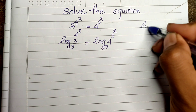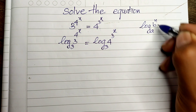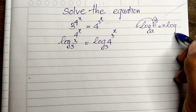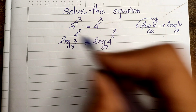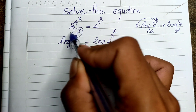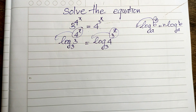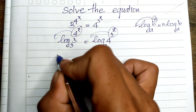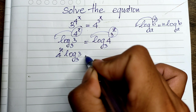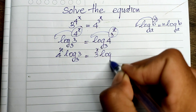Now we use the log rule: log base a of b to the power n equals n times log base a of b. So we can bring the exponent in front of the log. We take 4 to the power 8 in front of the log on the left, and 3 to the power 8 in front of the log on the right. So we get: 4^8 times log base 3 of 3, equals 3^8 times log base 3 of 4.